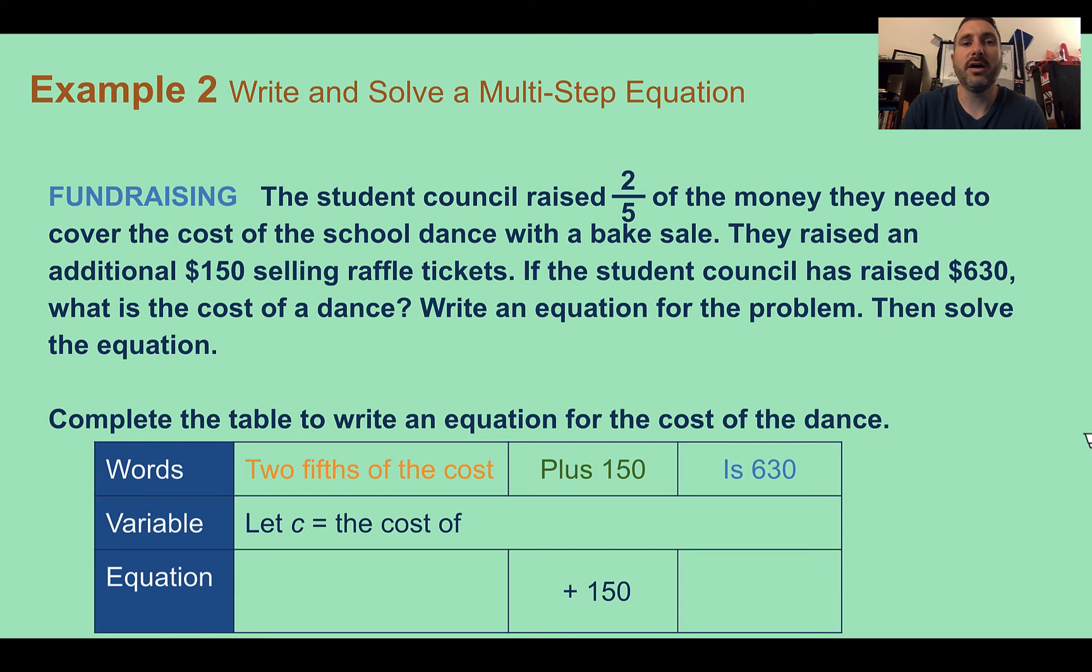Example 2. Write and solve a multi-step equation. Our real concept here is fundraising. The student council raised two-fifths of the money they need to cover the cost of the school dance with a bake sale. They raised an additional $150 selling raffle tickets. If the student council has raised $630, what is the cost of a dance? Write an equation for the problem, then solve the equation.